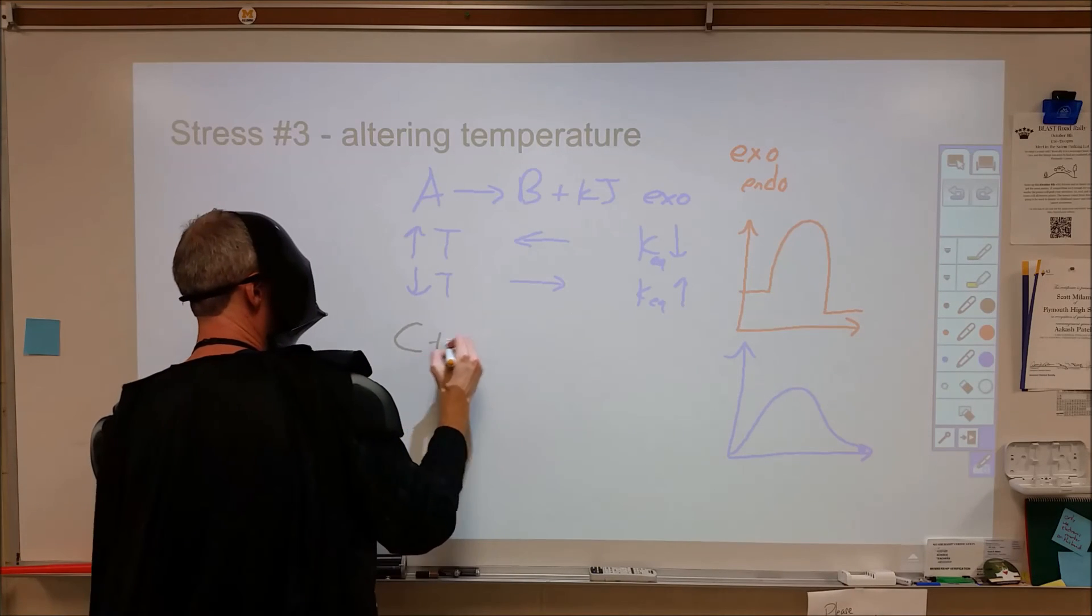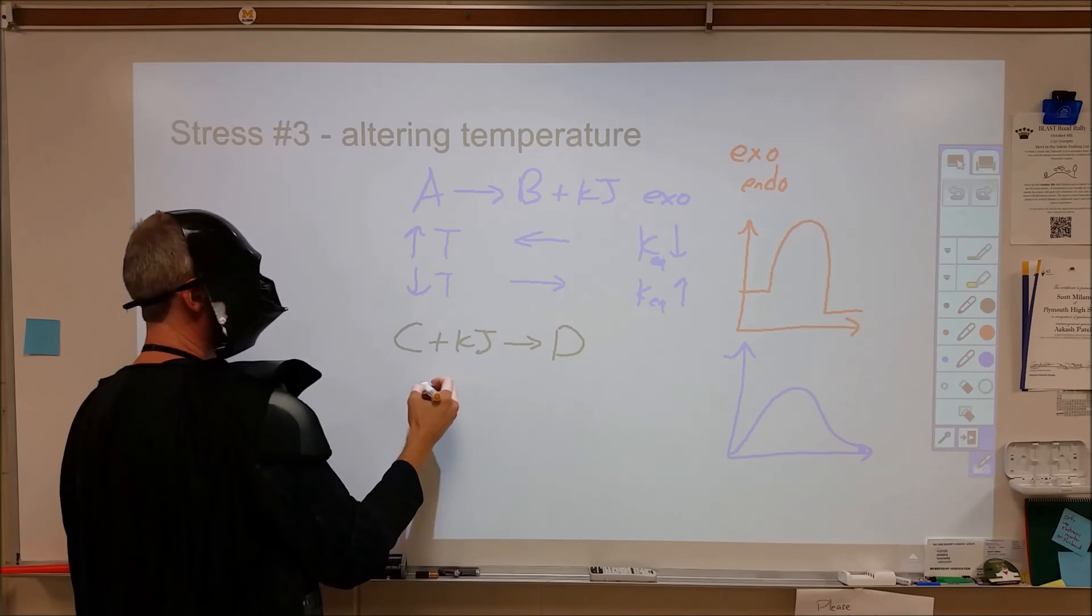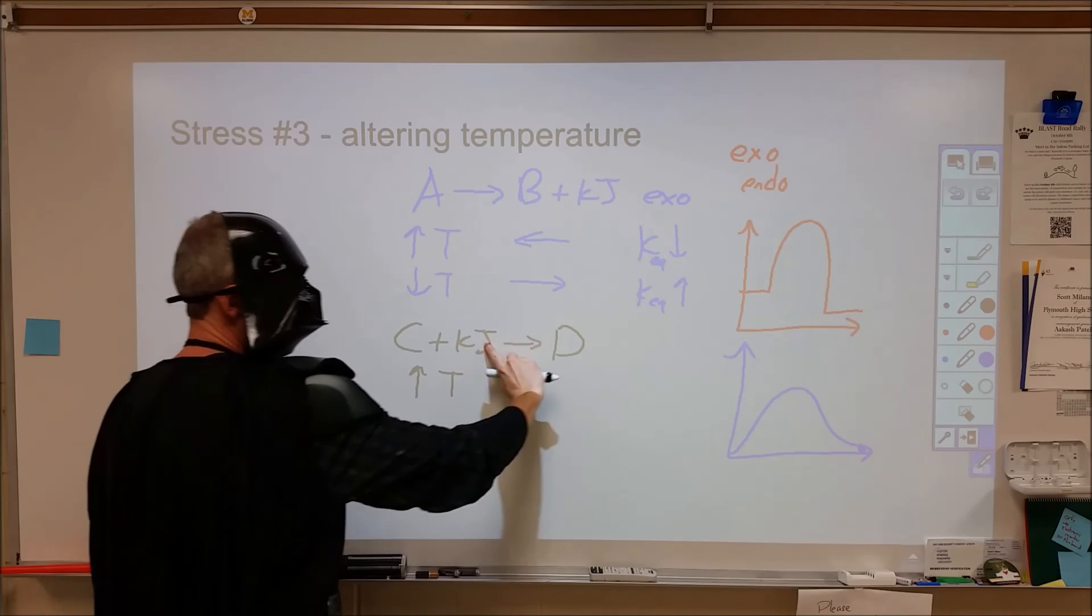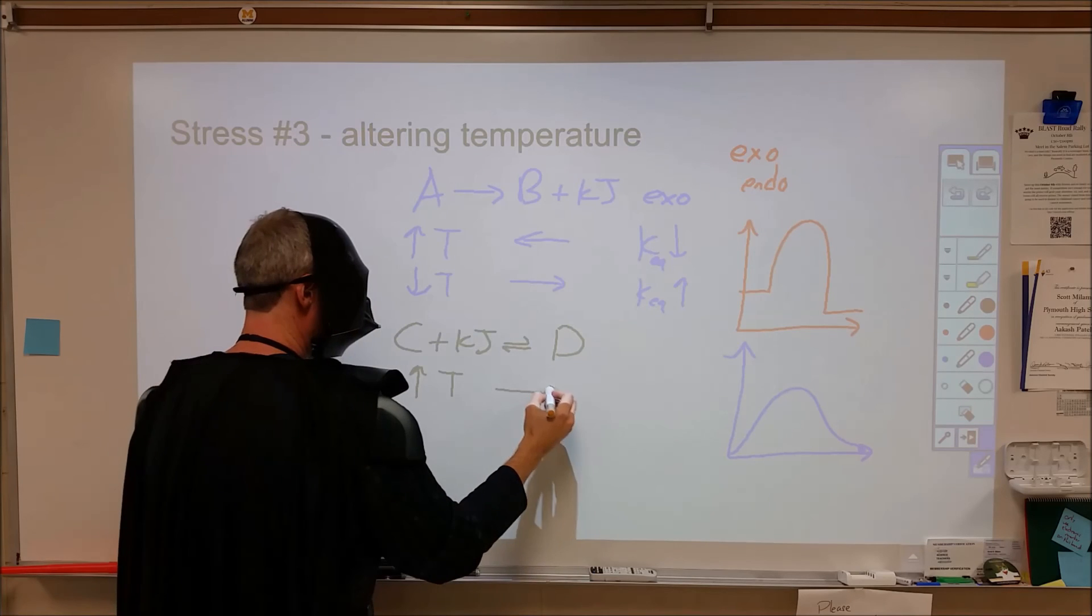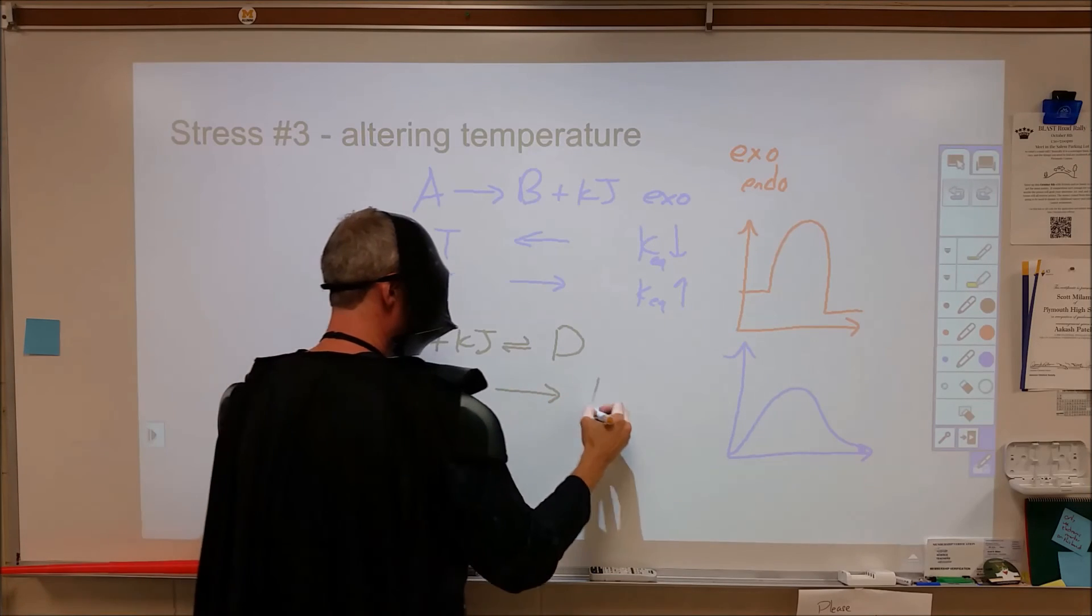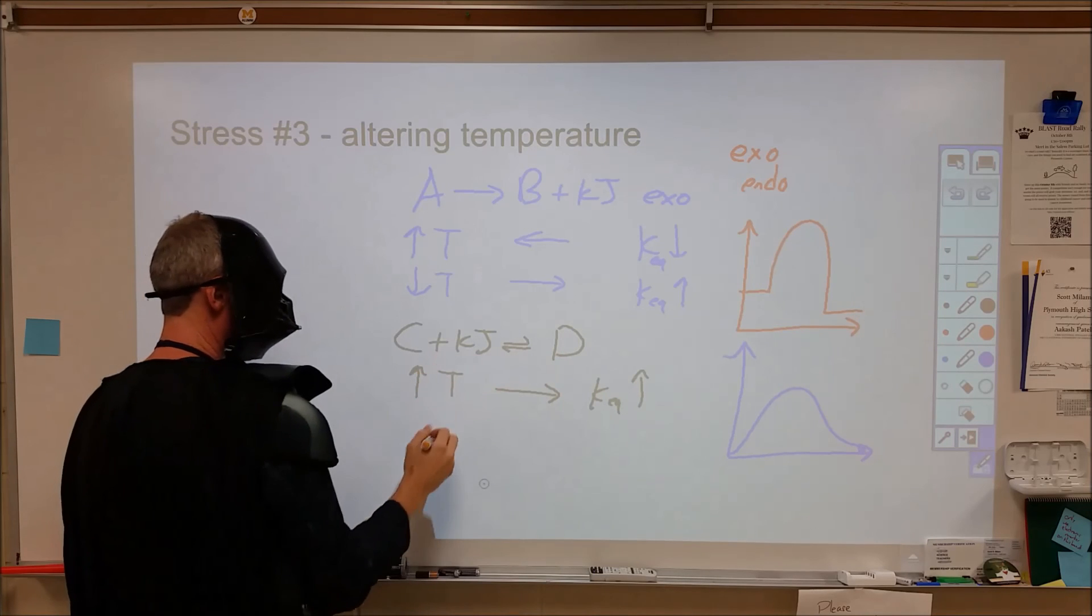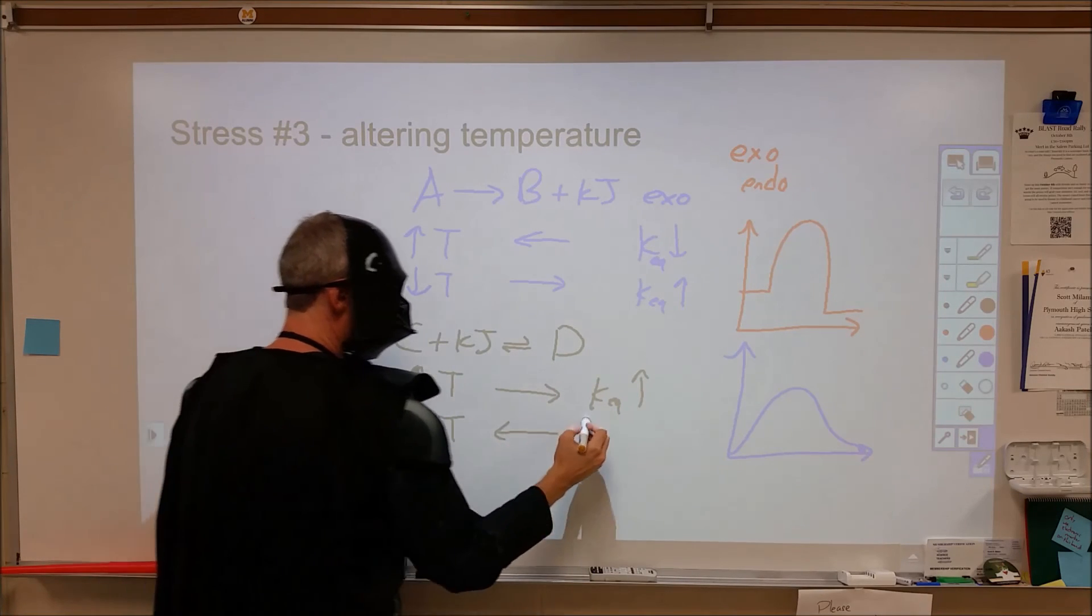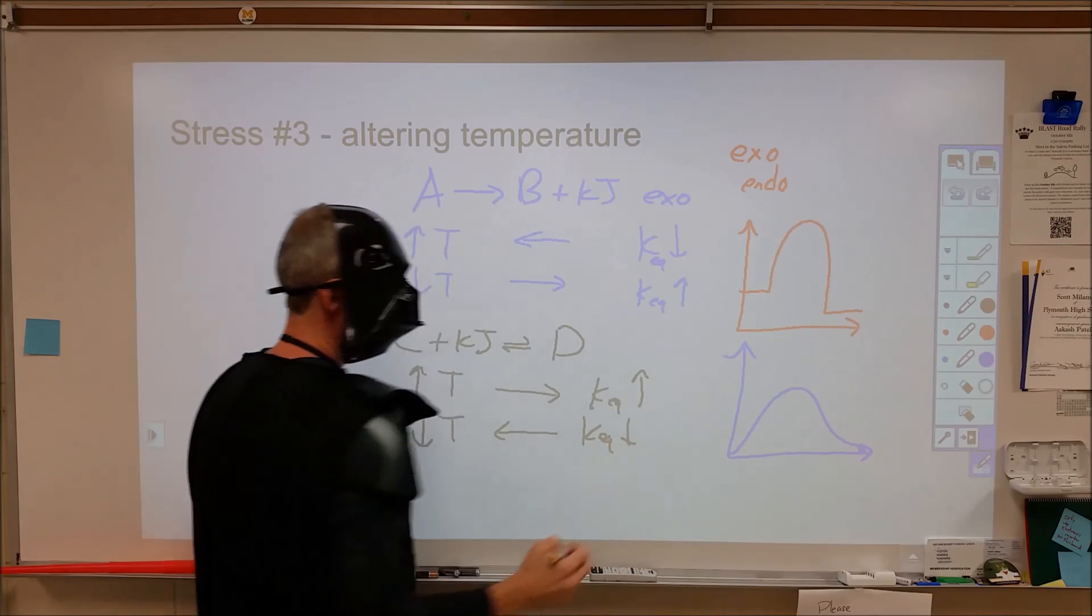If I have an endothermic reaction, we can again treat this in this way to come up with an answer, where if we increase the temperature, we are increasing this, that's going to cause a shift to the right. Therefore, my equilibrium constant is going to go up as more product and less reactant. If I drop the temperature, that's going to cause a shift to the left. My equilibrium constant will decrease as a result.